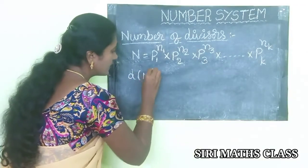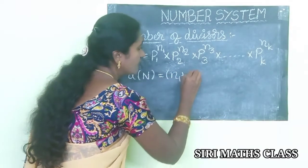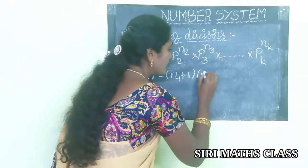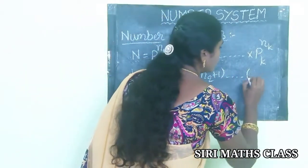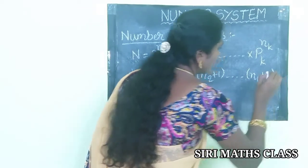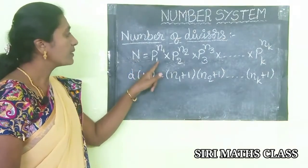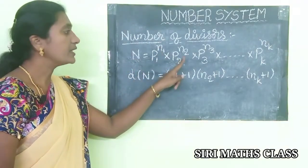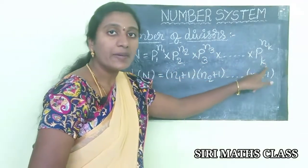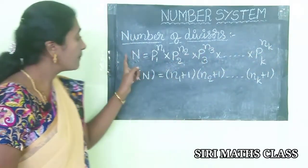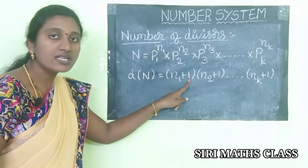d(n) is equal to (n1 + 1) into (n2 + 1) and so on into (nk + 1). This is the condition. So n = p1^n1 × p2^n2 × p3^n3 × ... × pk^nk, and the number of divisors d(n) = (n1+1)(n2+1)...(nk+1).